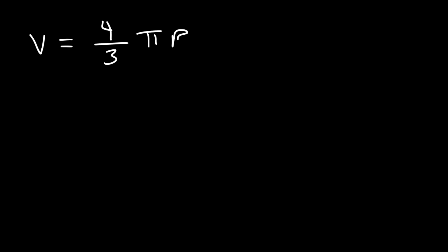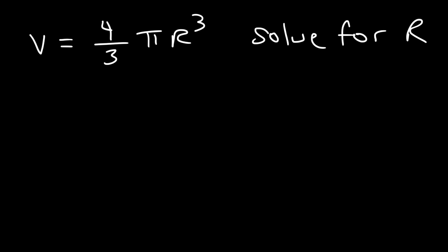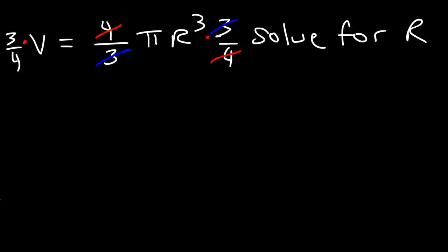The volume of a sphere is 4/3 times pi times r cubed. In this example, solve for r. The first thing I want to do is get rid of this fraction, so I'm going to multiply both sides by the reciprocal, which is 3/4. On the right side it completely cancels, so now I have (3/4)V equals pi r cubed.